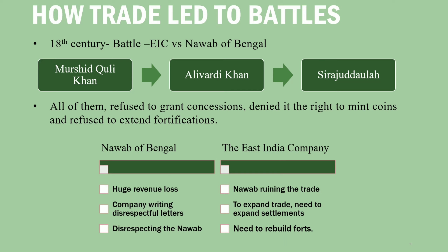The Nawabs also denied the company the right to mint coins and trade. They accused the company of deceit and blamed them for not paying revenues, due to which Bengal was facing losses. The company, on the other hand, declared that for healthy trade, taxes needed to be removed.